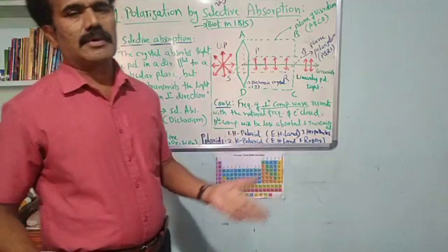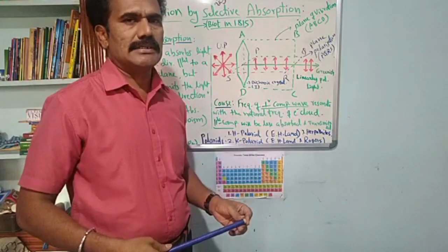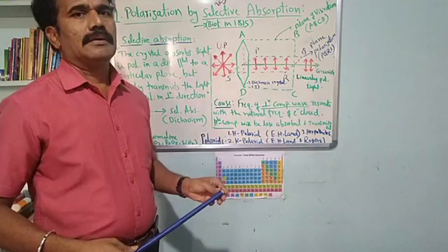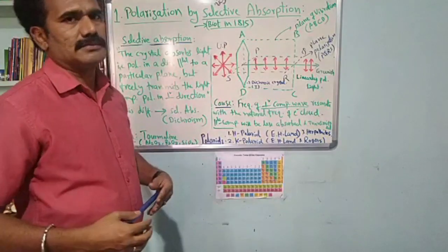He suggested that some crystals like tourmaline crystals, naturally available mineral crystals, show selective absorption type of polarization. First, let us understand what selective absorption is.